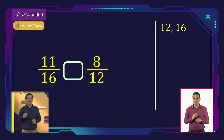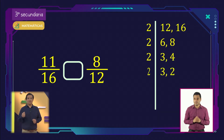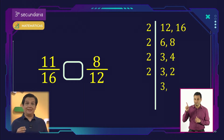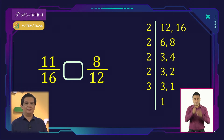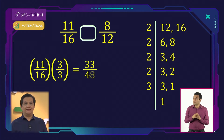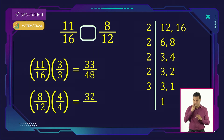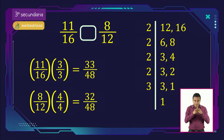El denominador común de 12 y 16 se obtiene con su factorización entre los números primos. Mitad de 12 es 6, mitad de 16 es 8, mitad de 6 es 3 y de 8 es 4. La mitad de 3 no es exacta y de 4 es 2, mitad de 2 es 1 y tercia de 3 es 1. Después, se multiplican los factores primos y se obtiene 48. 11 dieciséisavos se multiplica por 3 tercios igual a 33 cuarenta y ochoavos. Y 8 doceavos se multiplica por 4 cuartos igual a 32 cuarenta y ochoavos. Así, al tener el mismo denominador, se comparan los numeradores: 33 cuarenta y ochoavos es mayor que 32 cuarenta y ochoavos.